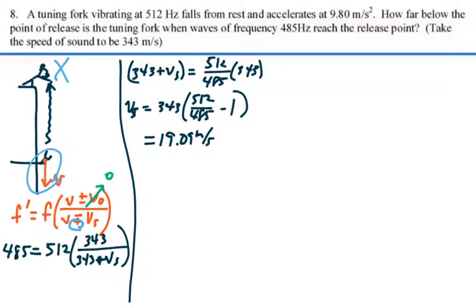And that's equal to 19.09 meters per second. So when the tuning fork produced the sound that you eventually heard it was traveling at 19.09 meters per second.